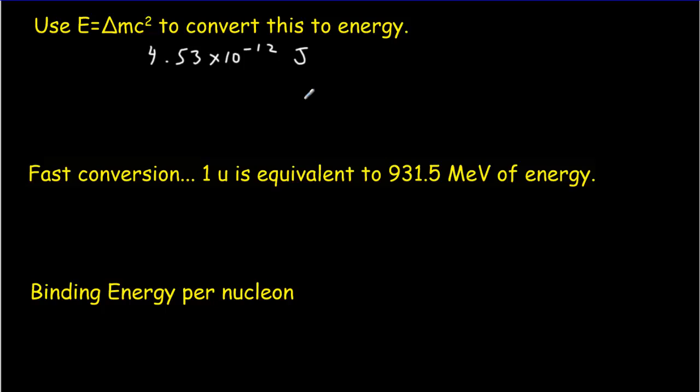Now it turns out that for nuclear energies, you usually express it in mega electron volts rather than joules. So we're going to convert joules to electron volts. And hopefully you remember that one electron volt is worth 1.6 times 10 to the minus 19 joules. So if you do that multiplication out, you're going to get 2.83 times 10 to the seventh EV. Usually we don't express it in EV. We express it in mega electron volts. So we've got to divide by a million and that would give us 28.3 mega electron volts.